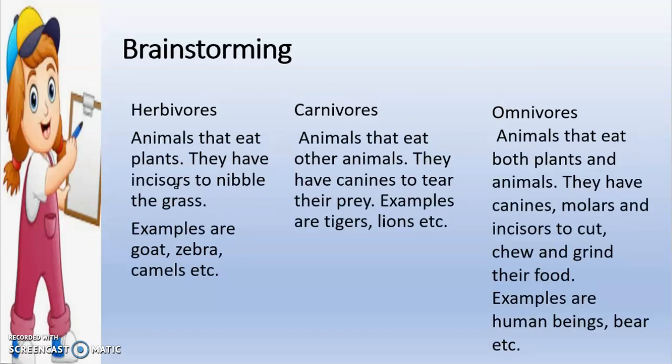Now we will see what kind of teeth herbivores, carnivores and omnivores have. Herbivores, as you know, are animals that eat plants. They have incisors that help them to nibble the grass. Examples of herbivores are goat, zebra, camel, etc.